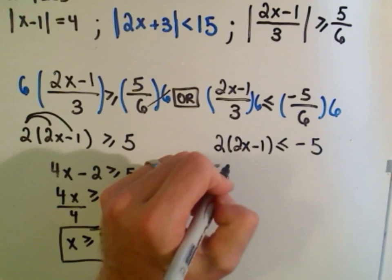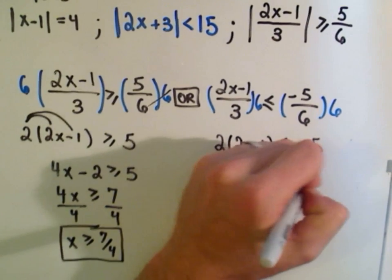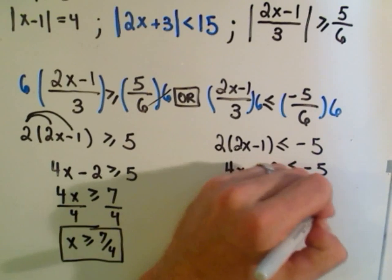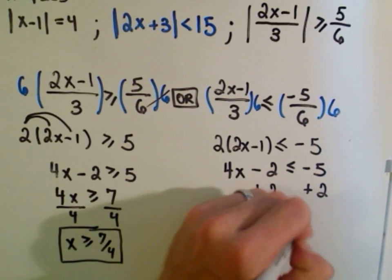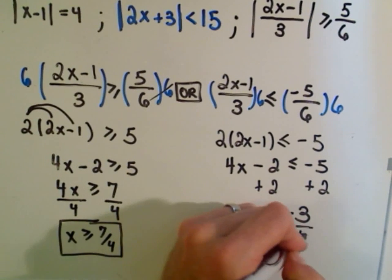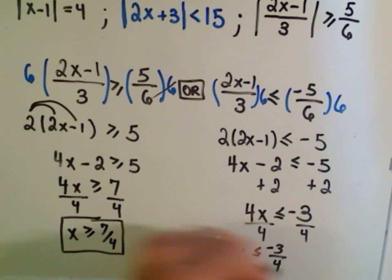All I have to do is solve. If I distribute, I get 4x minus 2 less than or equal to negative 5. If I add 2, I'll get 4x less than or equal to negative 3. Divide by 4. We'll get x less than or equal to negative 3 fourths. And that will be our solution.